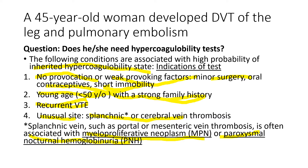Splanchnic veins include the portal vein, mesenteric vein, and hepatic veins. Myeloproliferative neoplasms include essential thrombocythemia, polycythemia vera, myelofibrosis, and chronic myelogenous leukemia. Patients with paroxysmal nocturnal hemoglobinuria (PNH) develop red urine due to hemoglobinuria released from intravascular hemolysis of red blood cells caused by complement destruction. It is also associated with aplastic anemia.